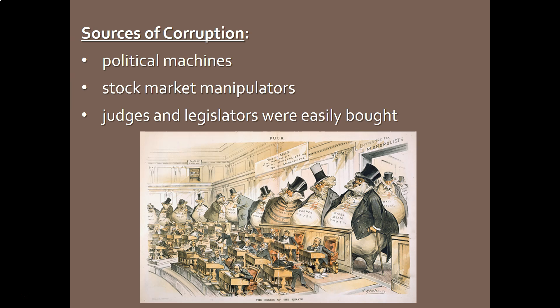Let's begin by talking about corruption. Americans often complain about government, and both sides claim the other side is corrupt. The Gilded Age is really known as the golden age of political corruption. It was a time period where political machines were extremely powerful. A political machine is basically a political organization led by a person they would usually refer to as a boss.